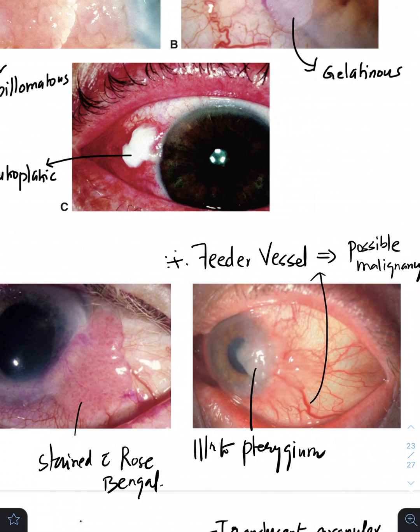And you can see this feeder vessel here. This feeder vessel indicates there is a possible malignancy. Now this feeder vessel might appear like a congested blood vessel what you see in your episcleritis or what you might see in inflamed pterygium or a pinguecula, but this feeder vessel indicates that this vessel is supplying the tumor and the tumor has invaded the underlying structures.